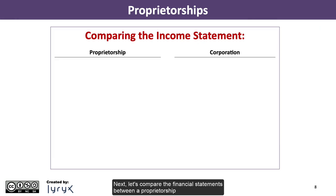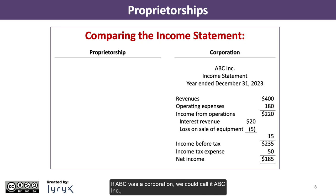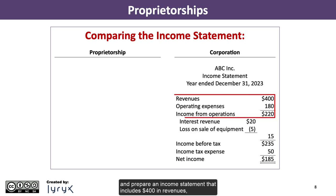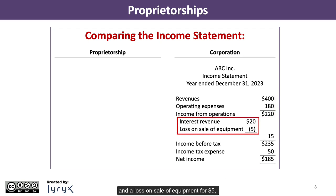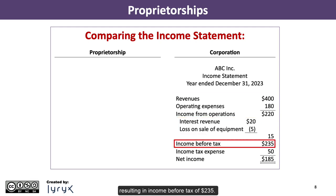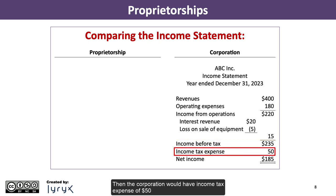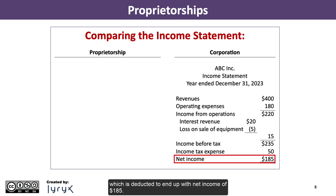Let's compare the financial statements between a proprietorship and a corporation using a simple consulting practice. If ABC was a corporation, we could call it ABC Inc., and prepare an income statement that includes $400 in revenues, operating expenses of $180 for income from operations of $220. We could also have some interest revenue of $20 and a loss on sale of equipment for $5, resulting in income before tax of $235. Then the corporation would have income tax expense of $50, which is deducted to end up with net income of $185.